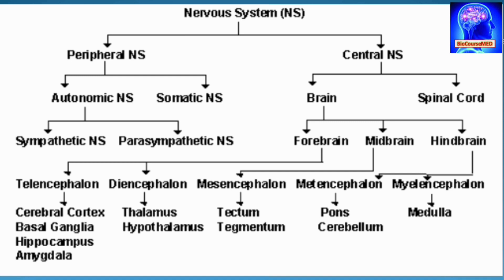The telencephalon leads to the cerebral cortex, basal ganglia, hippocampus, and amygdala. The diencephalon leads to the thalamus and hypothalamus. The mesencephalon leads to the tectum and tegmentum. The metencephalon leads to the pons and cerebellum, and the myelencephalon leads to the medulla oblongata.